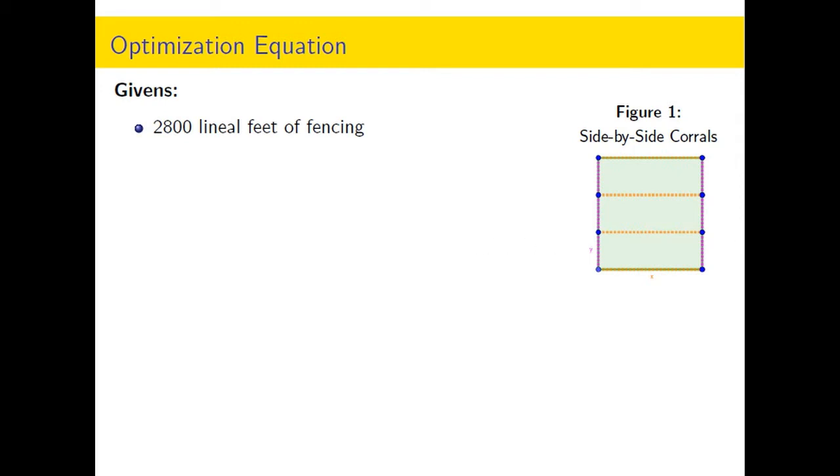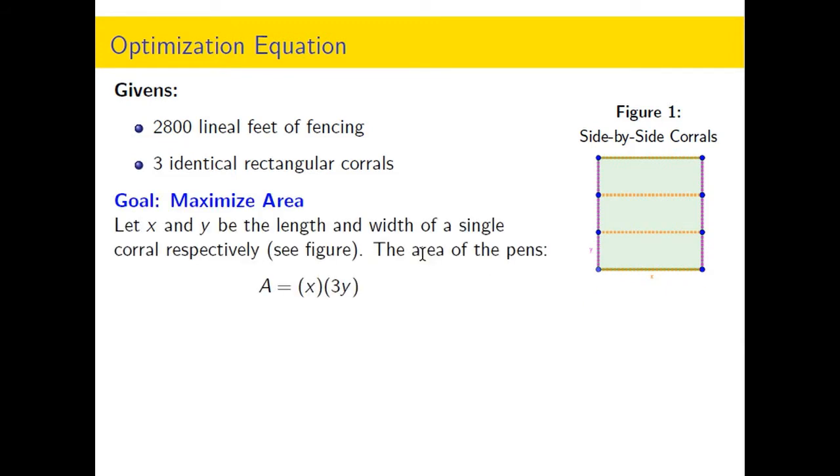A farmer has 2,800 feet of fencing that he can use to build these corrals, and he wants three identical rectangular corrals of maximum area. Let's look at this setup. I like to use x for the horizontal segments and y for the vertical ones. If x times y is the area of one of these pens, well we have three of them.